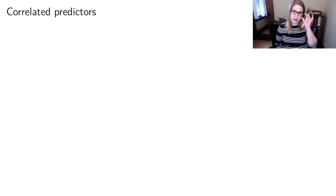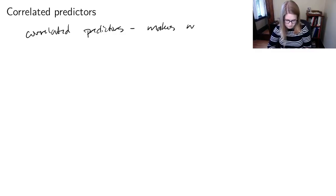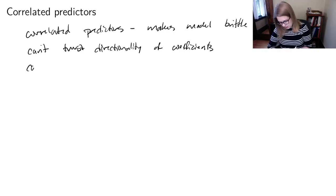What I do want to spend some time on is thinking about the problem of correlated predictors. So if you have correlated predictors, it makes your model very brittle. We're imagining that our data is a sample from some larger population, and if we were to take another sample from that same population and try and fit the model again, that model would be potentially very different if we have correlated predictors. So you can't trust the directionality of the coefficients, and you can't trust p-values.